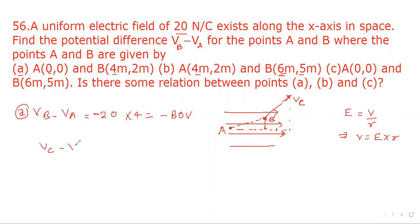VC minus VB and again at point C the potential will be less than at point B. So it will be negative. Electric field is 20 and difference in x coordinate will be 2. So that is minus 40 volt.